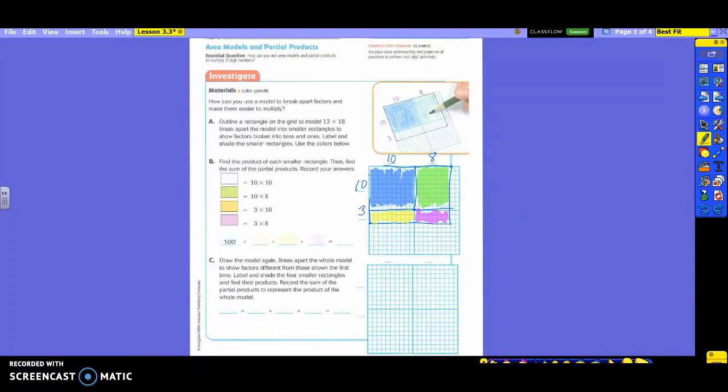Now we actually need to do the math. They did the first one for us. Their blue was 10 times 10, so that gives us what? 100. So what's our green? 10 times 8, which gives us 80. So go ahead and fill that in.